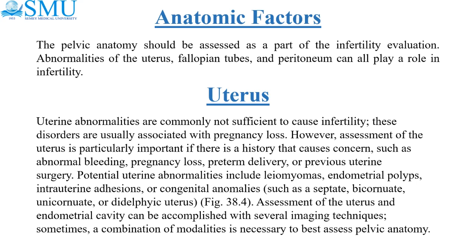However, assessment of the uterus is particularly important if there is a history that causes concern, such as abnormal bleeding, pregnancy loss, preterm delivery, or previous uterine surgery. Potential uterine abnormalities include leiomyomas, endometrial polyps, intrauterine adhesions, or congenital anomalies such as septate, bicornuate, unicornuate, or didelphys uterus.